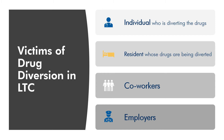There are four victims of drug diversion in long-term care. The first victim is the individual who is diverting the drugs. The second is the residents whose drugs are being diverted, also co-workers and the employer.